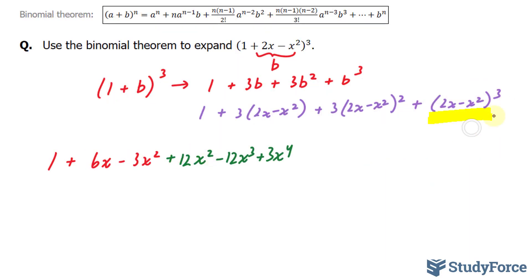Lastly, we have to use the binomial theorem for this. So I'll assign this as my a. And my b will be assigned as -x². All right, let's do this carefully.